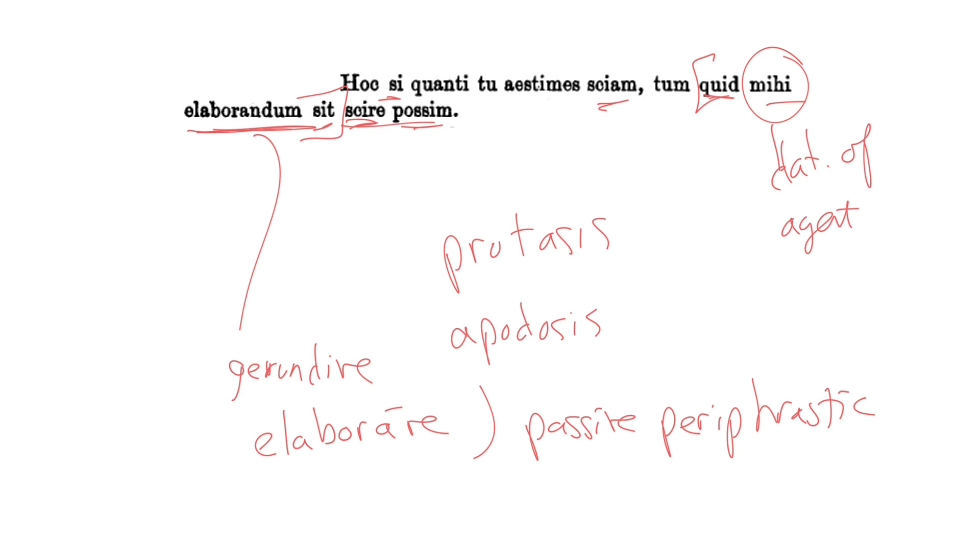Cicero wants to know, how much effort should I put into it? But if I should know, si sciam, how much you value this thing, then I could know, scire possim, how much effort I should put into it.